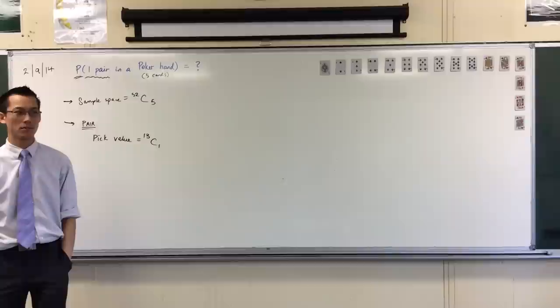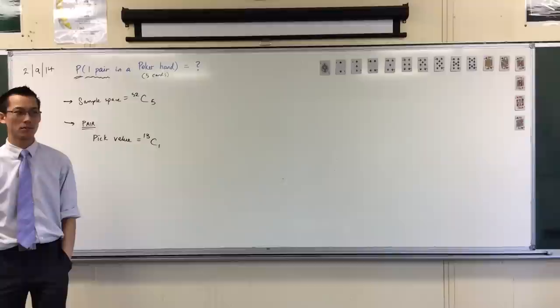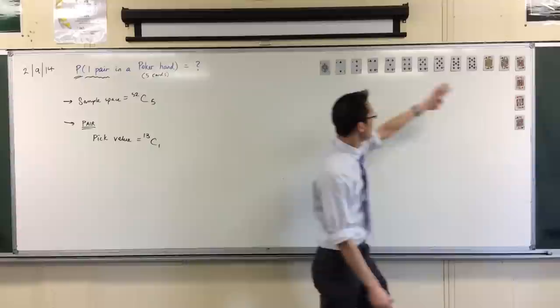Now, as you just told me, there are 13 to choose from, and I need to choose one value. So, for instance, suppose we pick the king. That's the value we picked out.